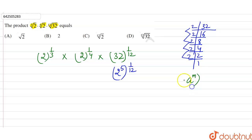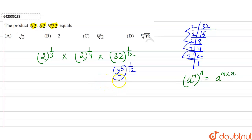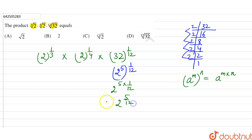There is the law of exponents that says a raised to the power m, whole raised to the power n, equals a raised to the power m into n. So we can write this as 2 raised to the power 5 by 12.